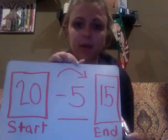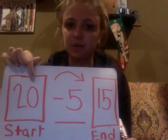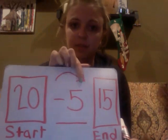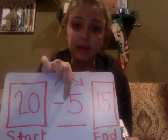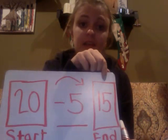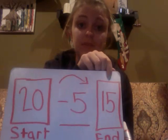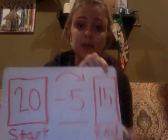So now I have my start: Lily started with 20. My change is she gave away five, so it's minus five. And then she ended with 15 popsicles. Very good.